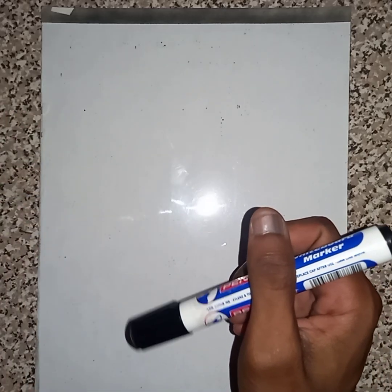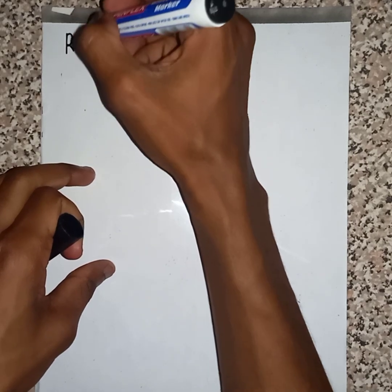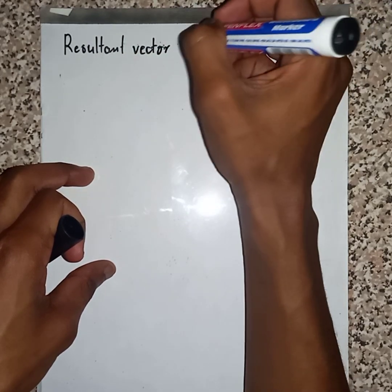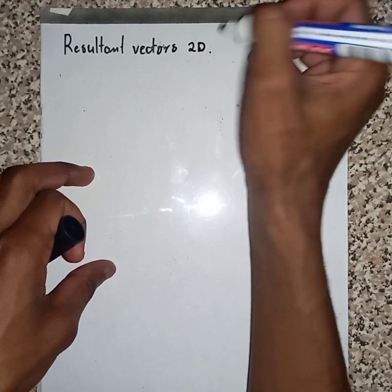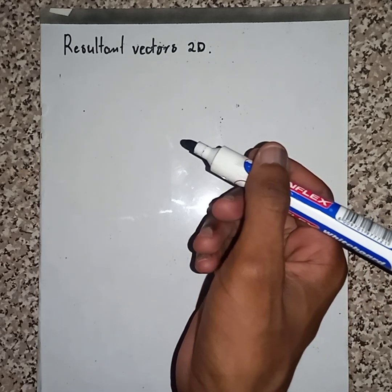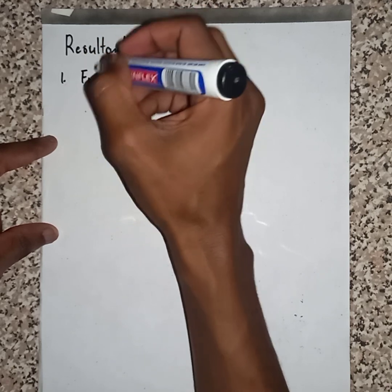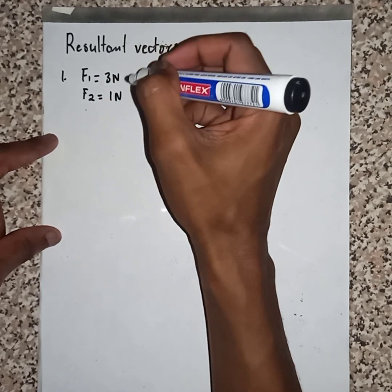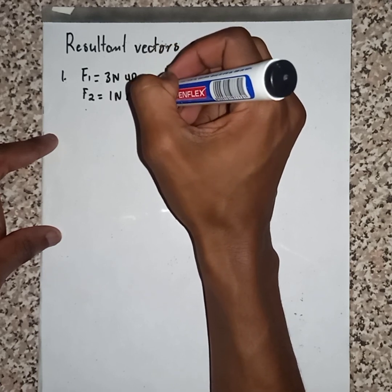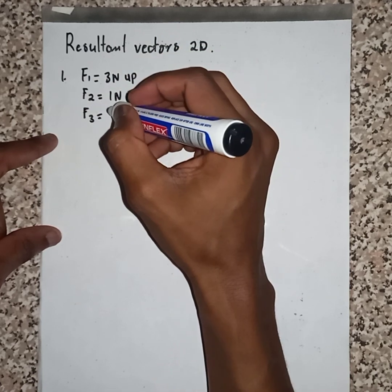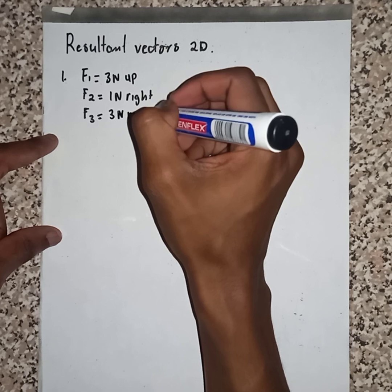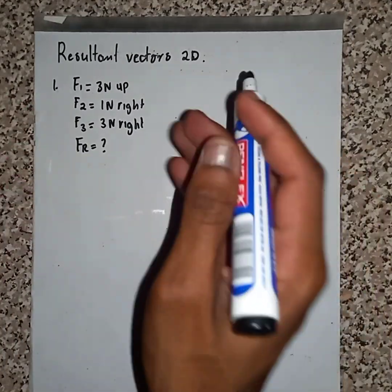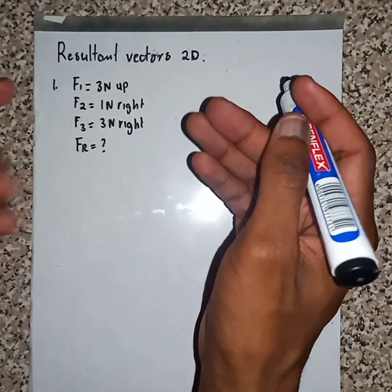Good day. Today we are going to do resultant vectors for two dimensions. Last time we were dealing with one dimension. Now let's say I give you F1 to be 3 newtons, F2 which is 1 newton upward, and F3 which is 3 newtons. I ask you to calculate FR. How are you going to calculate the value of FR? Let me take this information and put it in the form of a diagram in order to visualize it.